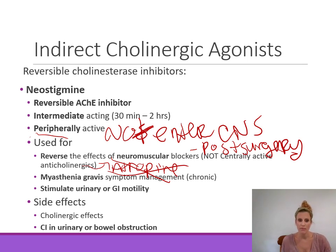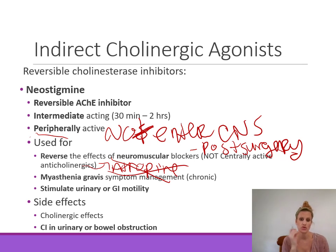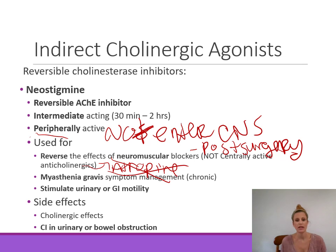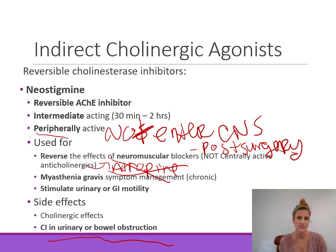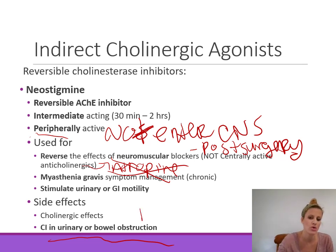Neostigmine is used for symptomatic management of myasthenia gravis — not just diagnosis but treatment, since it is longer-acting and helps treat muscle weakness. Neostigmine can also be used to stimulate urinary and GI motility, but is contraindicated if there is any urinary or bowel obstruction. Side effects are cholinergic side effects — SLUDS.